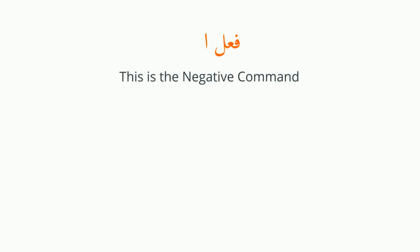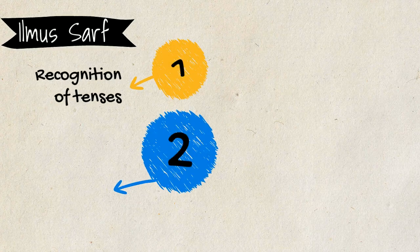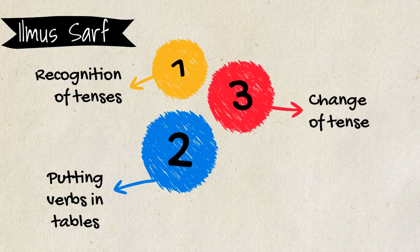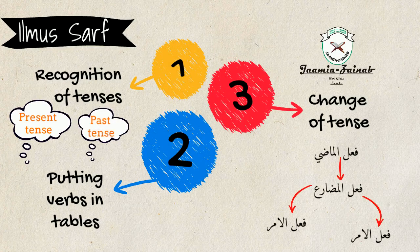Fi'lul nahhi is the negative command. In this form you usually prohibit people from doing things — for example: don't eat, don't come, don't talk. Having looked at the four forms of verbs, we can now define ilmus serf. Ilmus serf is the study of Arabic knowledge wherein you will be able to recognize the tenses — the past tense, the present tense, the future tense.